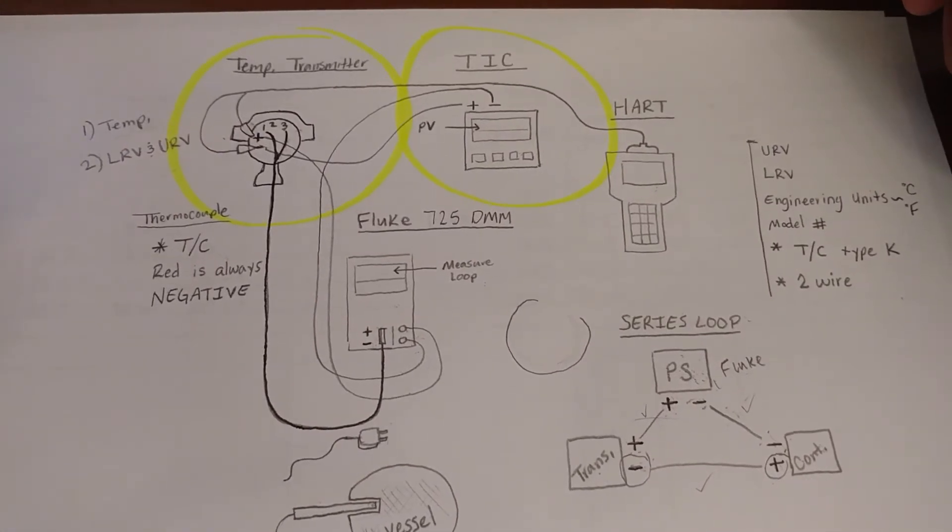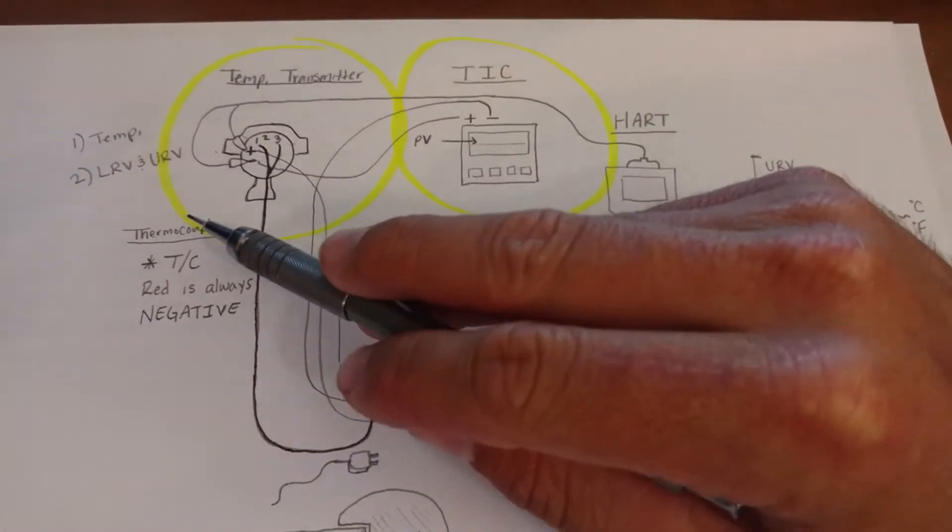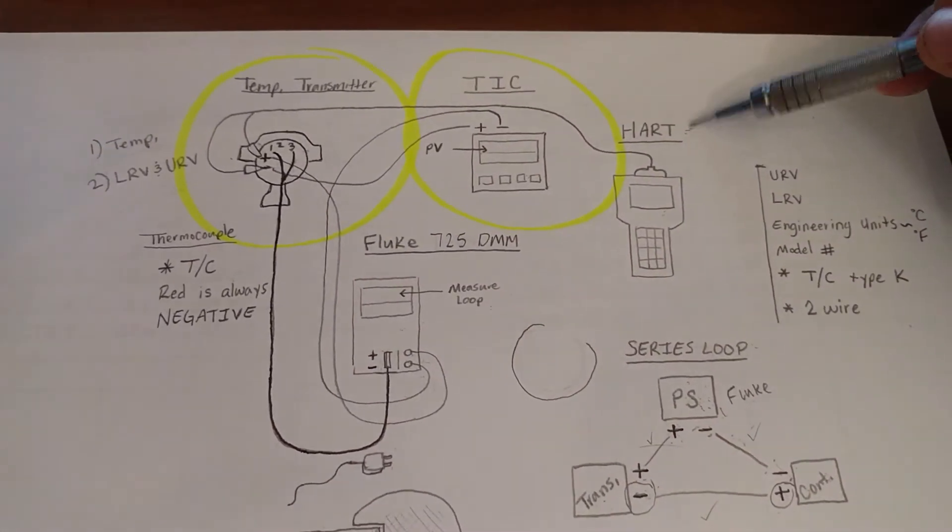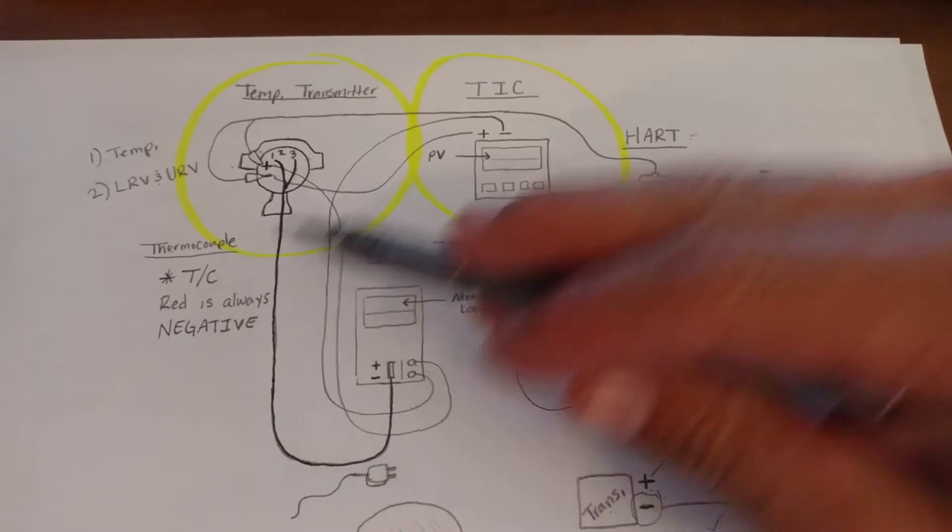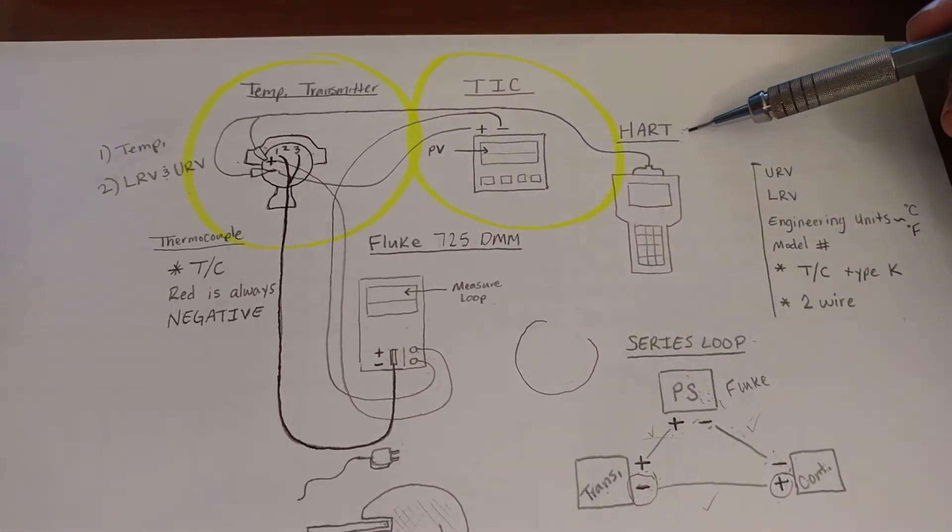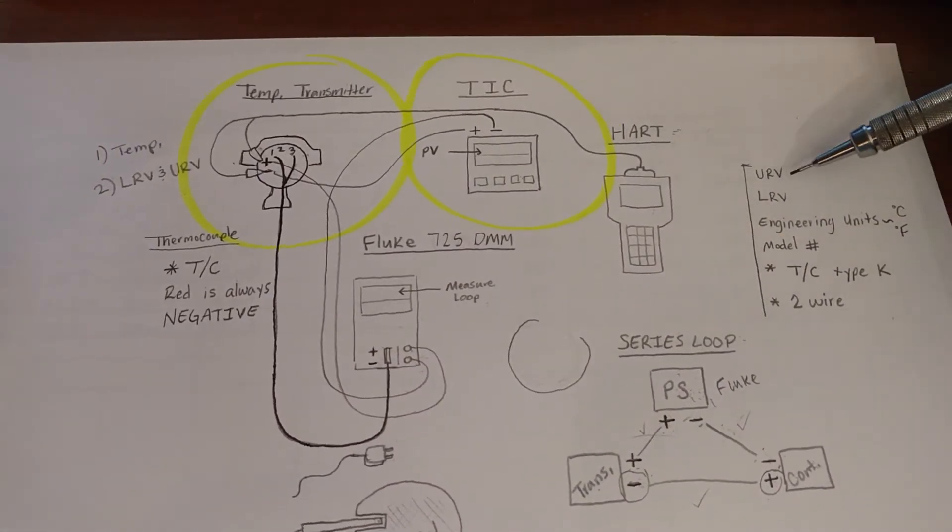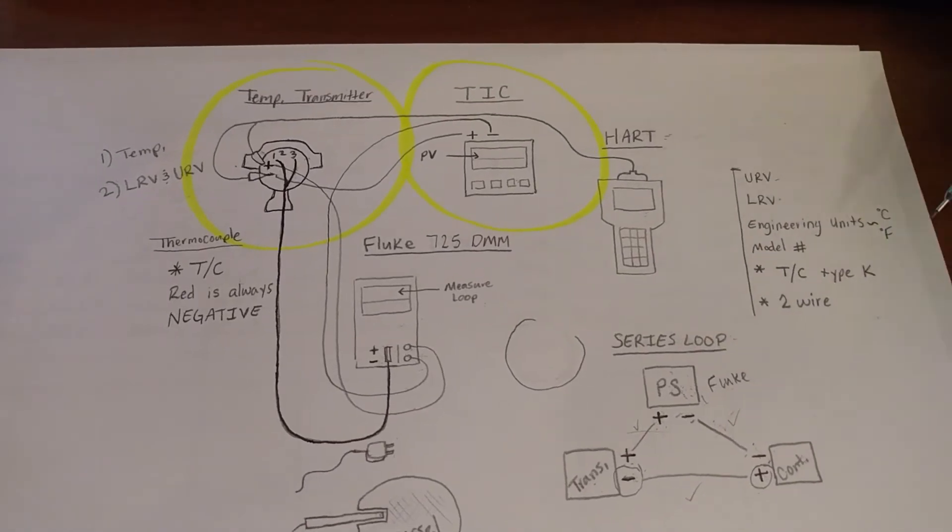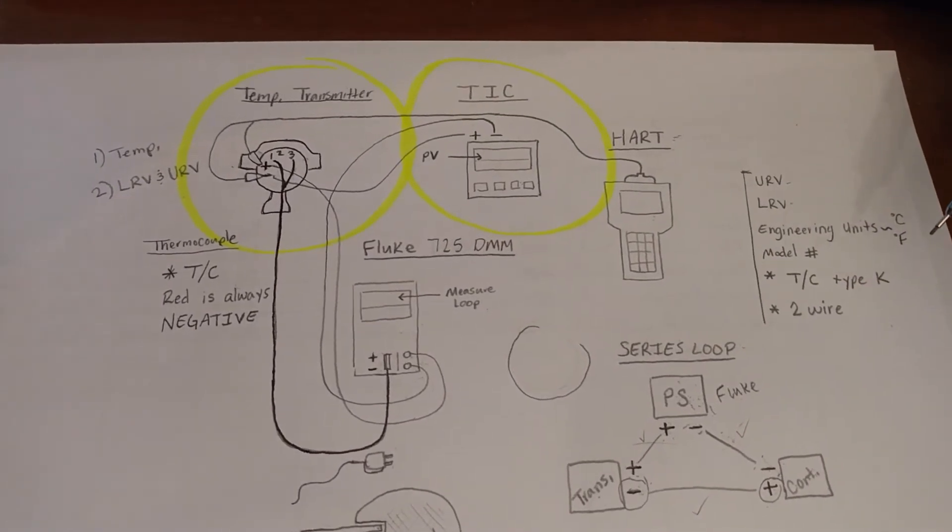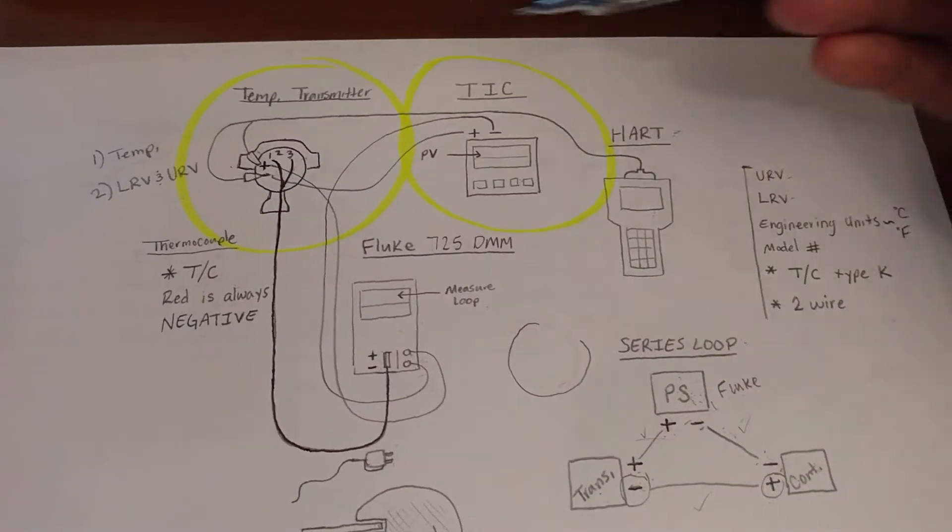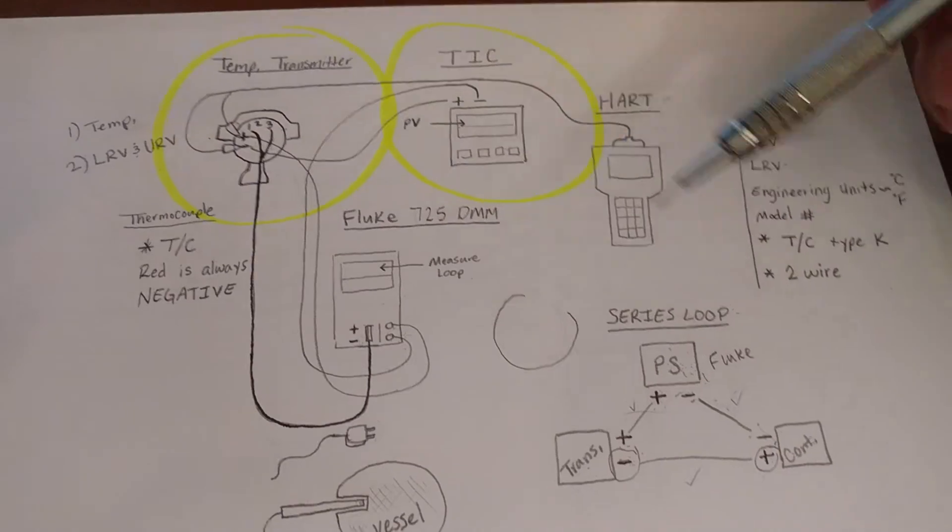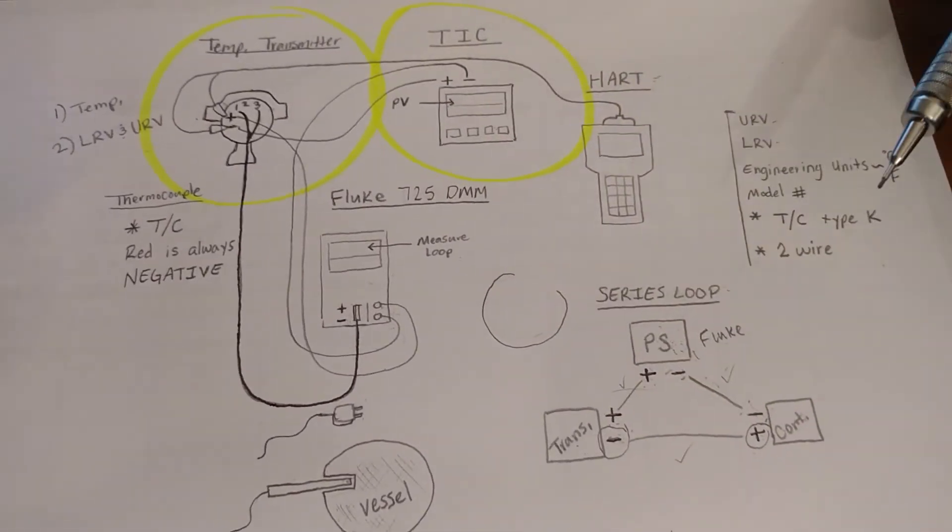Well, we're going to get that because we're going to use a thermocouple and we're going to use a HART device. The thermocouple will give us our temperature. The HART device will allow us to set an upper range value and a lower range value. So in order to do that, we need to connect these devices to the transmitter.